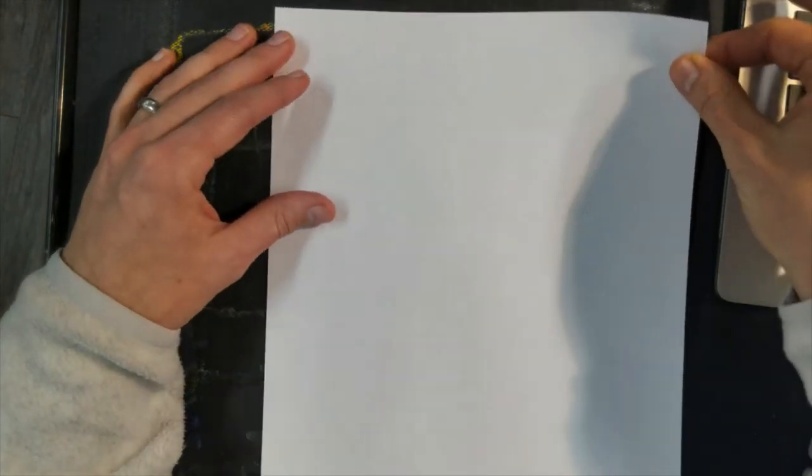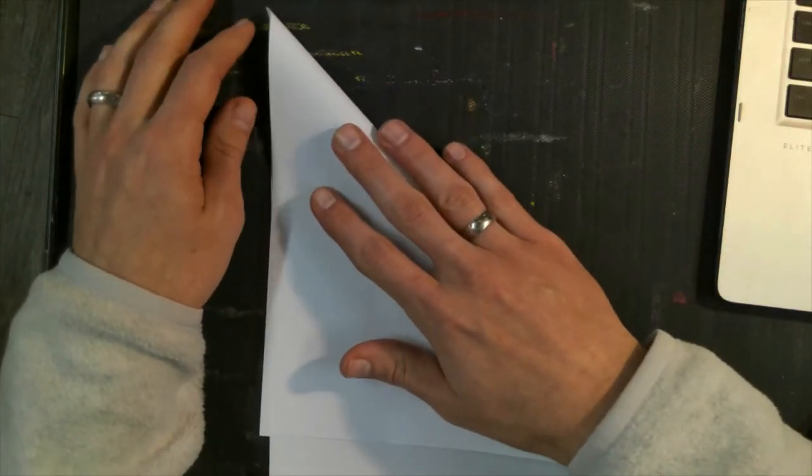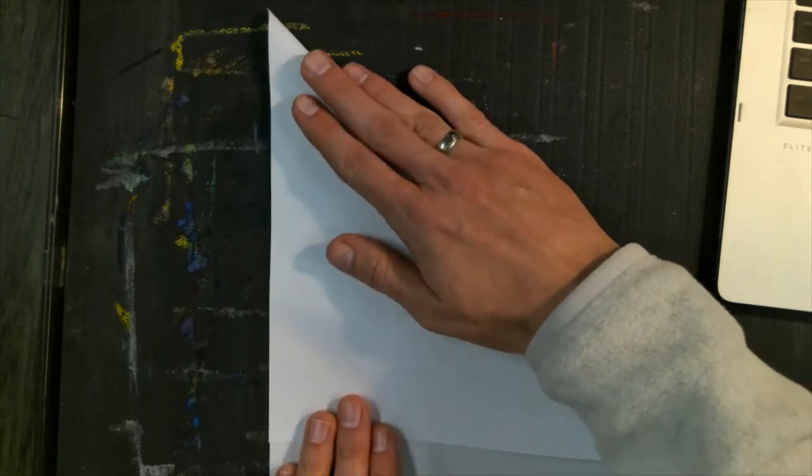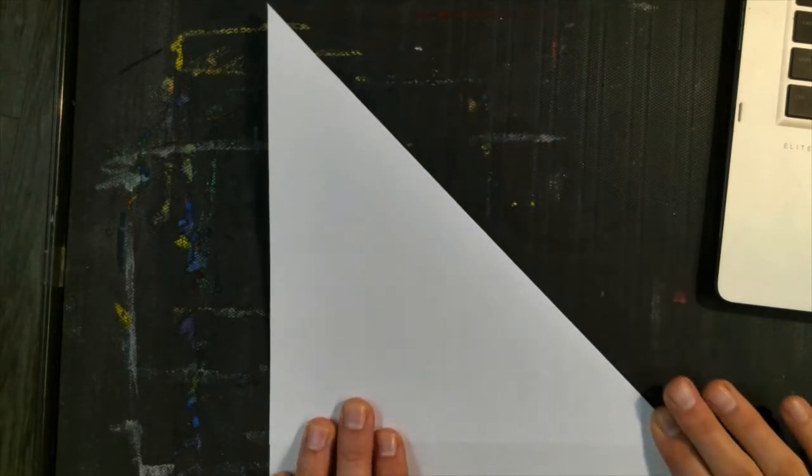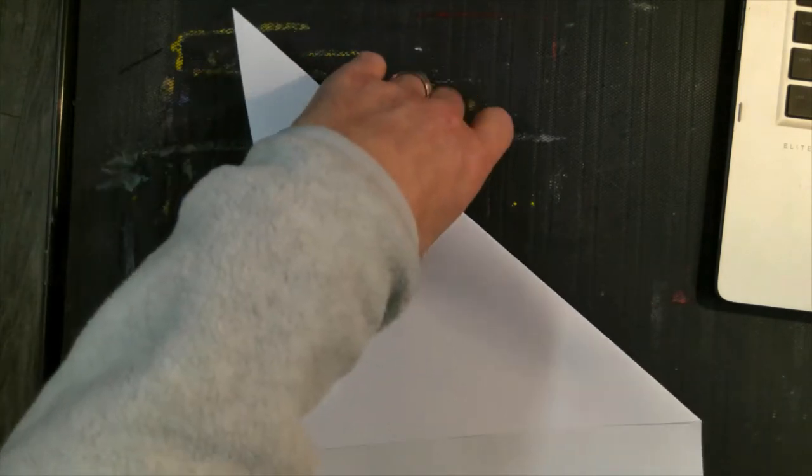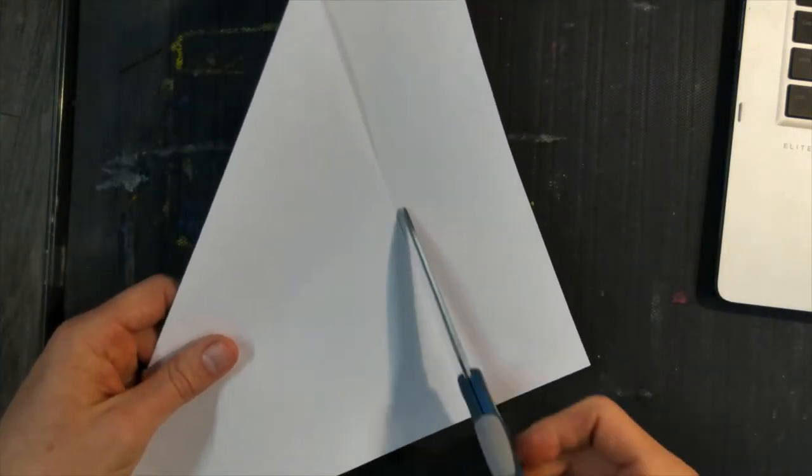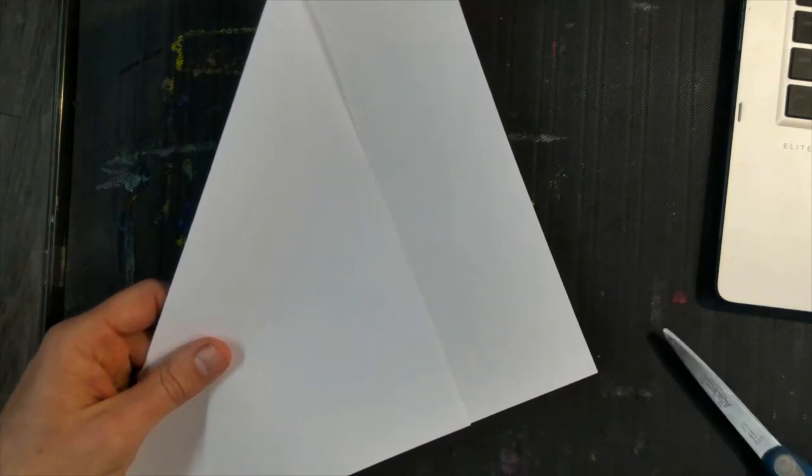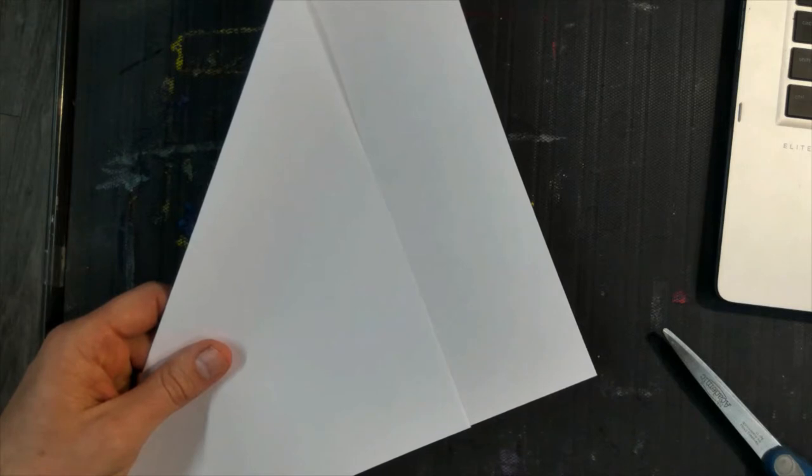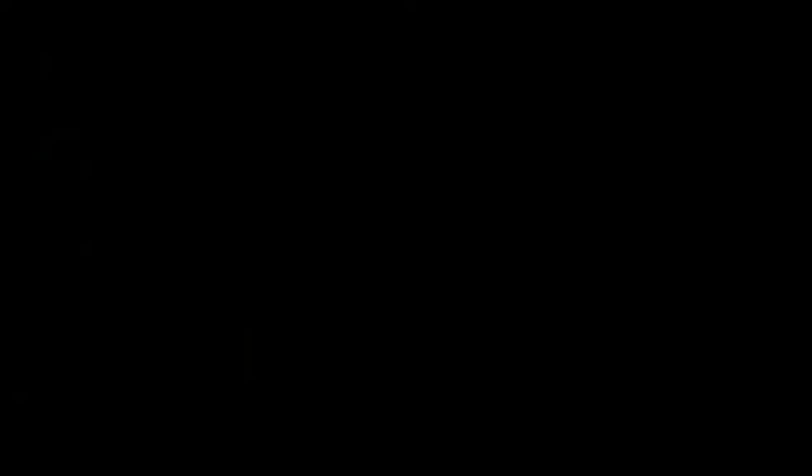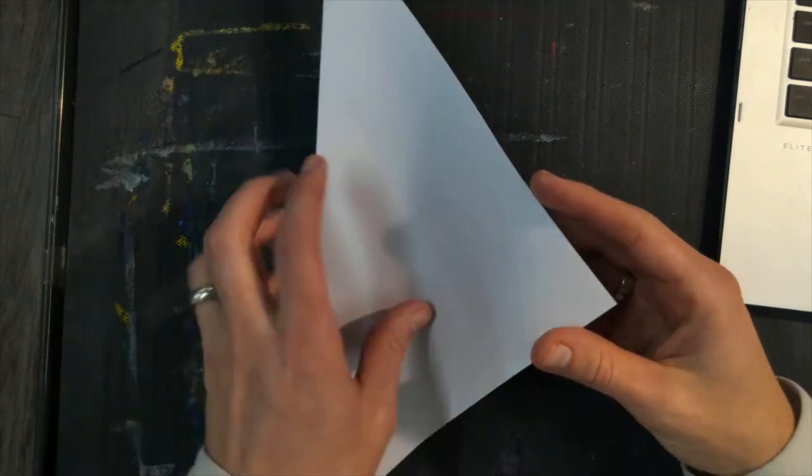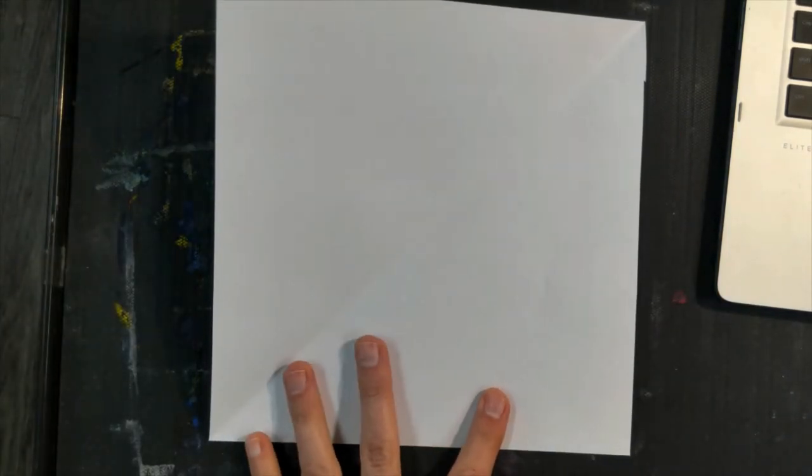This is how you take a piece of printer paper and turn it into a square. So first you take one corner, and you're going to fold it until the side lines up perfectly, like that, and then you just press all along that diagonal line. Then you take your scissors, and you see this line right here. I'm going to cut that out. After you've cut off that extra piece, then you unfold it, and you have an almost perfectly square piece of paper, which will be perfect for our project.